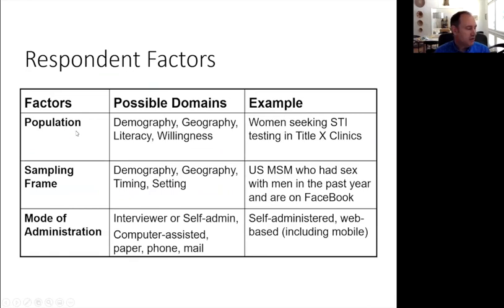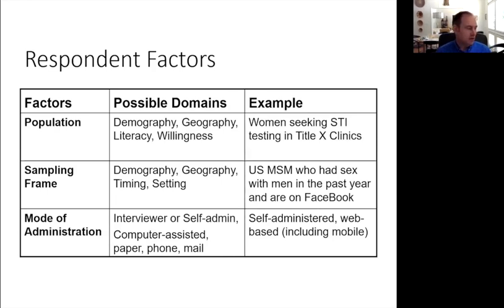Think about respondent factors: what is the demography, where are they going to be responding, how high is their literacy, what is their motivation to complete the survey? For example, if we're surveying women seeking STI testing in Title 10 clinics in the U.S. South, that gives us a lot of information about how to construct that questionnaire — we know that health literacy is lower in the South. Similarly, define your sampling frame.